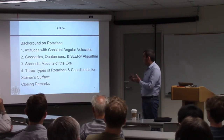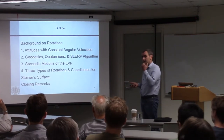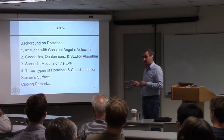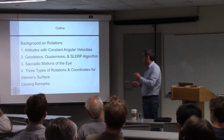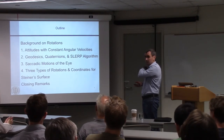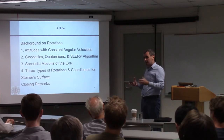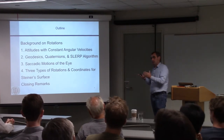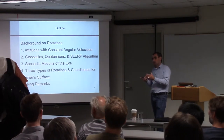Rather than using Euler angles, which give you unphysical rotations when you discretize them, quaternions allow you to do this in a very smooth manner. Another application is saccadic motions of your eye — the glancing motions back and forth when you're reading. And hopefully I'll have time to talk about the three types of rotations and how they're related to Steiner's surface, which is an immersion of RP2, the real projective plane.